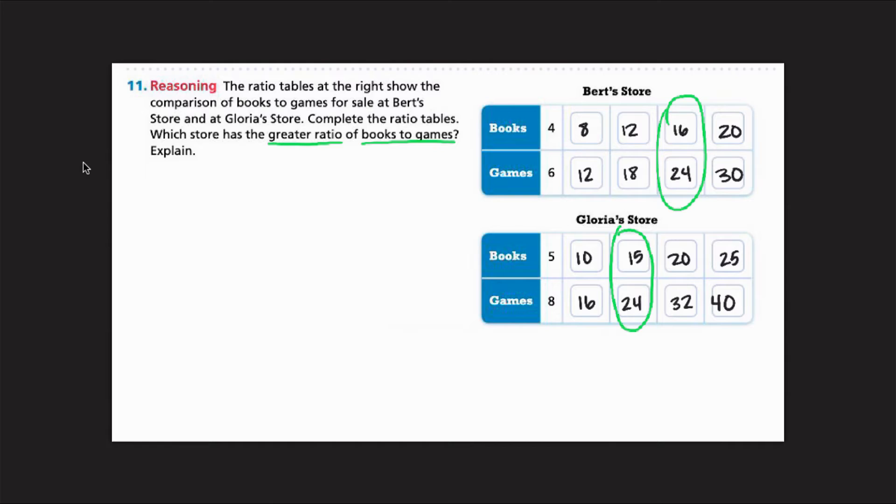So I'm going to circle that ratio. And then I can go ahead and compare the books now. So I can see Bert's store, he's got 16 books for every 24 games, and Gloria has 15 for every 24 games. So it's clear here that Bert has more. So in real time, we would write a complete sentence to answer this. But for now, we'll just say that Bert's store is the one that has a greater ratio of books to games.